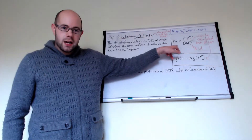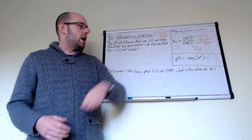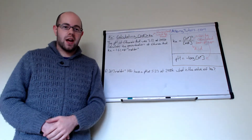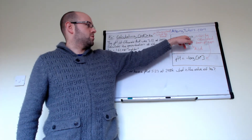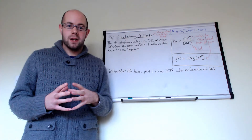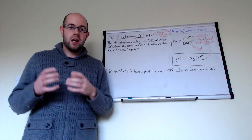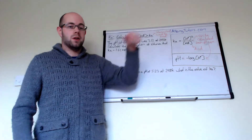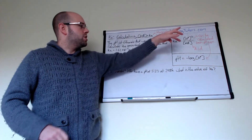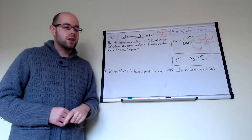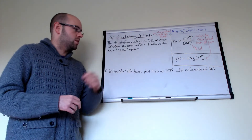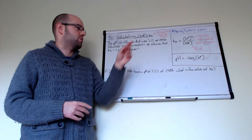The Ka expression is equal to H⁺ squared divided by [HA]. This is an assumption that has been made that the concentration of H⁺ and A⁻ is the same, so we can say that H⁺ is squared. We can use this expression to work out the concentration of a weak acid and we can work out Ka itself.